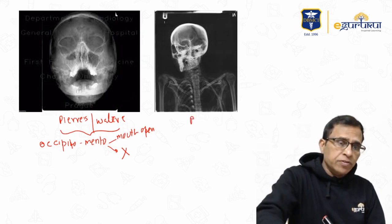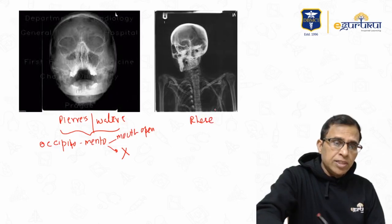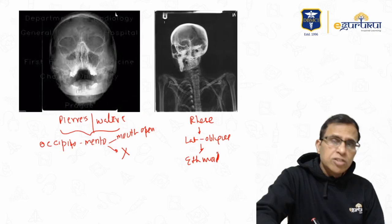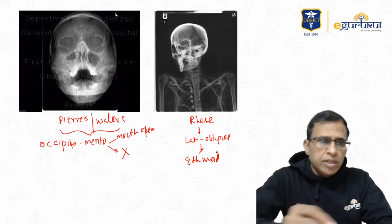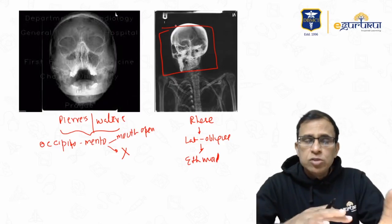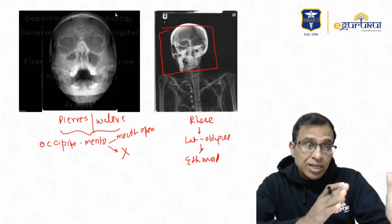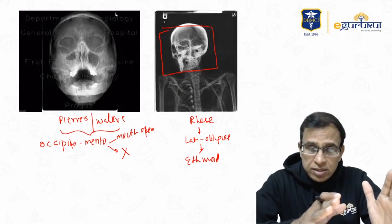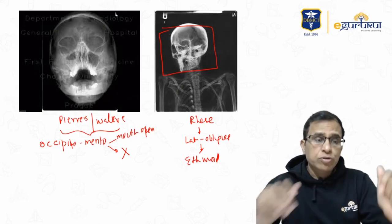And this is Racer view. Racer view is a lateral oblique view and is used for the ethmoids. Now this shown here is not exactly the Racer view — the actual Racer view is only a close-up portion — but I've shown you the entire thing so you can understand the angle, since a close-up view makes it very difficult to interpret.